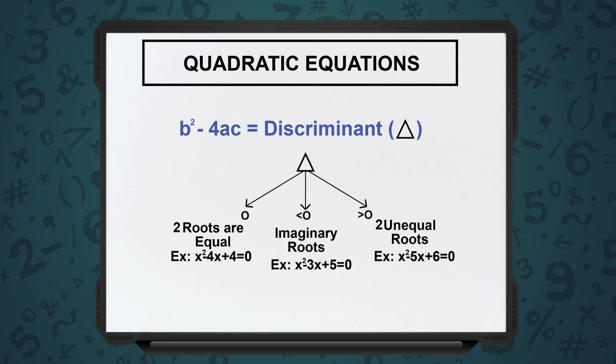Now, for B² − 4AC, there are three possibilities: either the value is positive, the value is negative, or the value is zero.